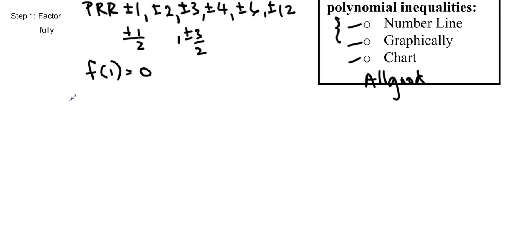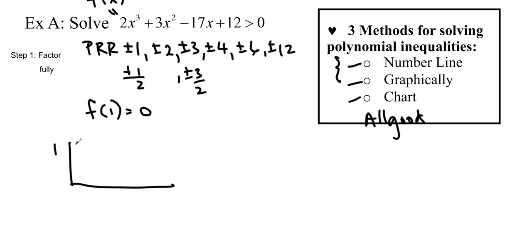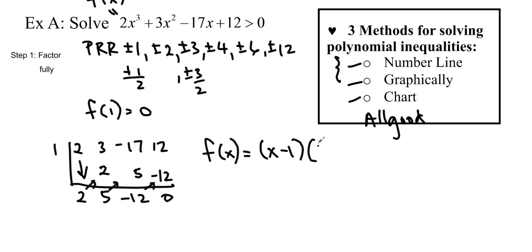I'm going to use synthetic division. Sometimes I just like to use synthetic because it has a smaller footprint, and I don't have to take up as much paper or screen. That gives us a remainder of 0, which is very good. We write the partially factored form x-1 times 2x²+5x-12.